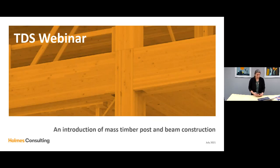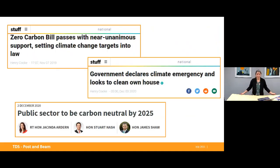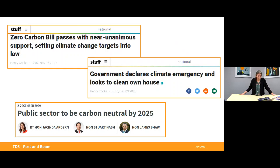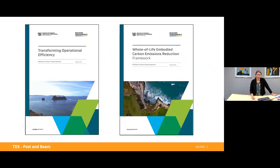I'm excited to see this changing. Before I get into the body of my presentation on mass timber post and beam construction, I want to touch on why we need to see more timber in New Zealand buildings. Using timber for the primary structure is a great way to reduce embodied carbon. In 2019, the New Zealand government introduced the Zero Carbon Bill, which sets a goal of transitioning to a net zero emissions economy by 2050. In 2020, the government introduced the Carbon Neutral Government Program, requiring public sector agencies to measure and publicly report their emissions. Government agencies must set reduction targets and offset any emissions they don't cut by 2025. This all flows down to the building and construction sector.